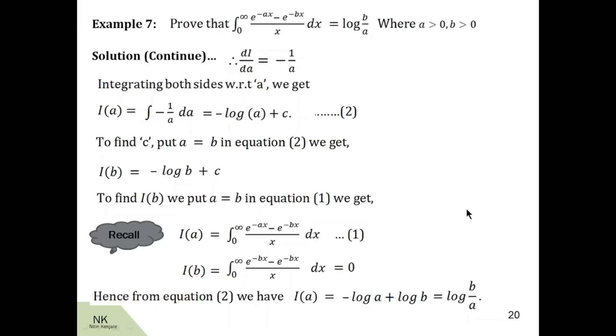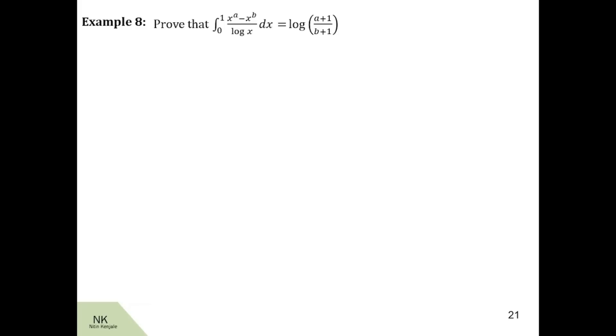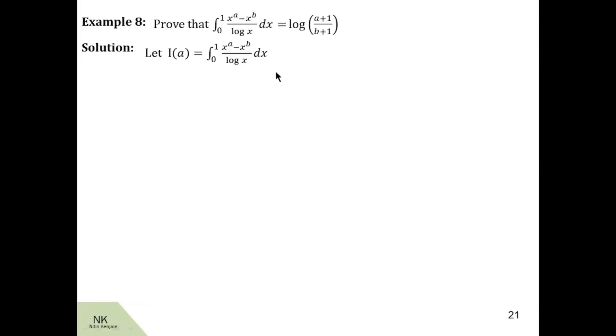Let us go ahead with the next example. Here we are asked to prove the integral of x raised to a minus x raised to b, upon log x, dx over the limit 0 to 1, is equal to log of a plus 1 upon b plus 1. There are two parameters involved, a and b. So we consider a and label this integral as i of a, calling this equation number 1.